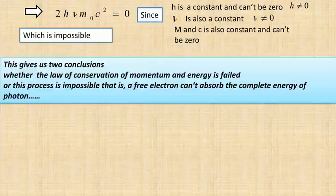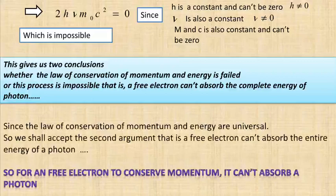This gives us two conclusions: either the laws of conservation of momentum and energy fail, or this process is impossible — that is, a free electron cannot absorb the complete energy of a photon. Since the conservation laws are universal, we accept the second conclusion: a free electron cannot absorb the entire energy of a photon, as it cannot conserve momentum while doing so.